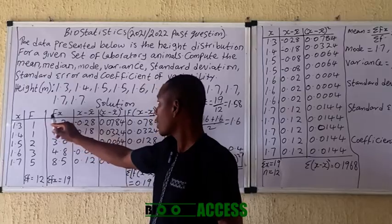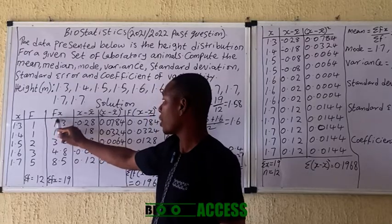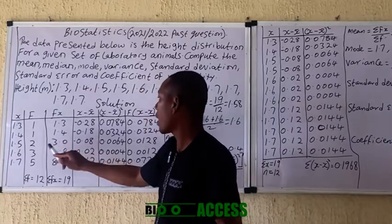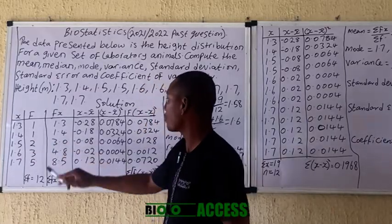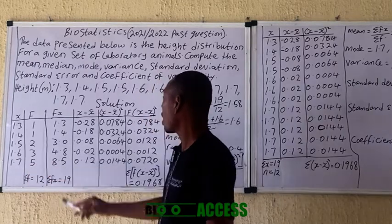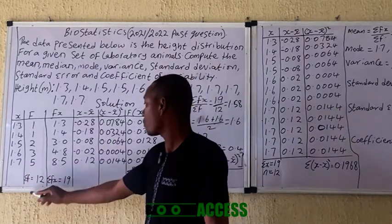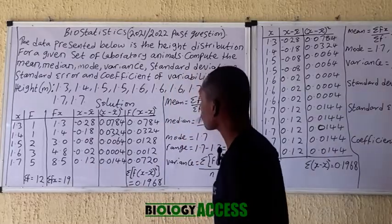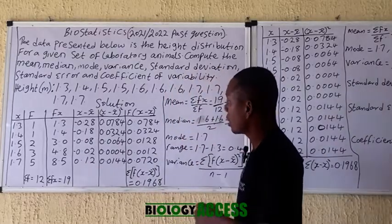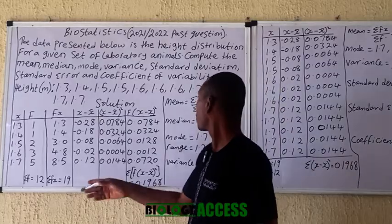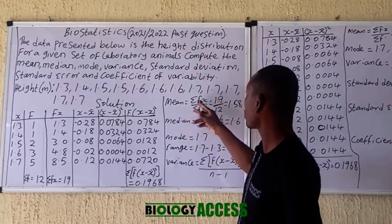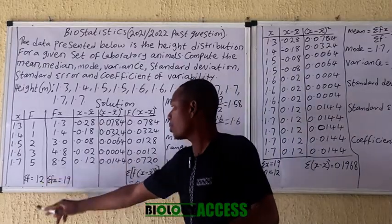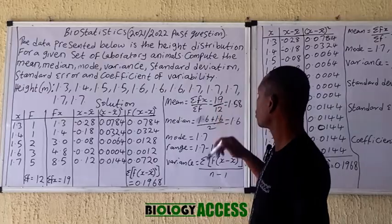After building the frequency table, I now look for f(x), which means I use the frequency to multiply the corresponding x value for each row. Once I get all the f(x) values, I find the summation of f(x) and the summation of f. I can then calculate the mean using the formula: mean = summation of f(x) divided by summation of f.